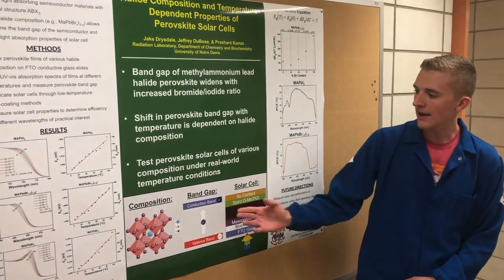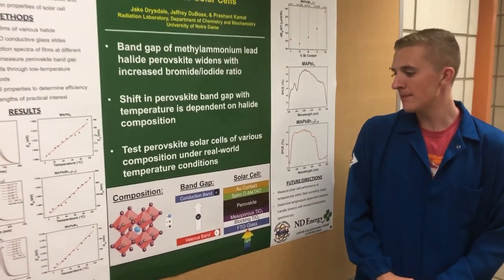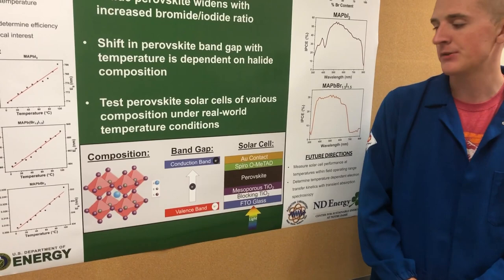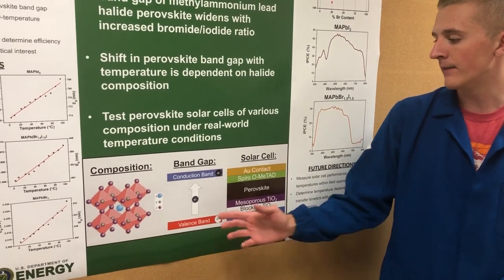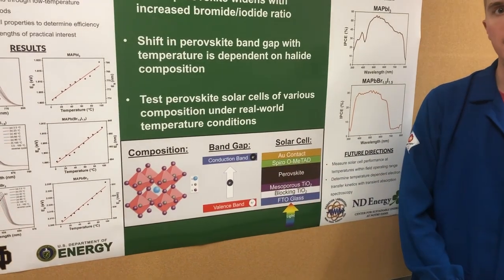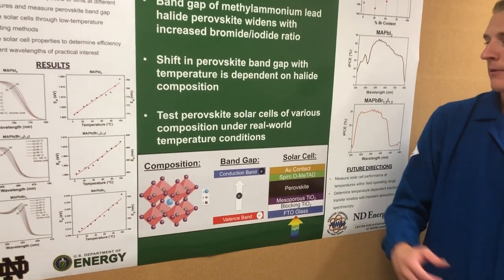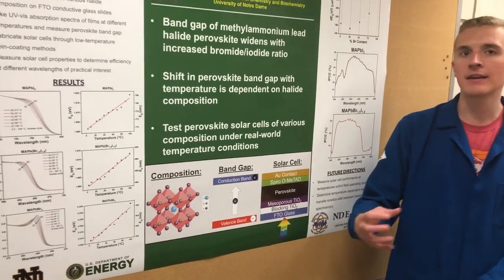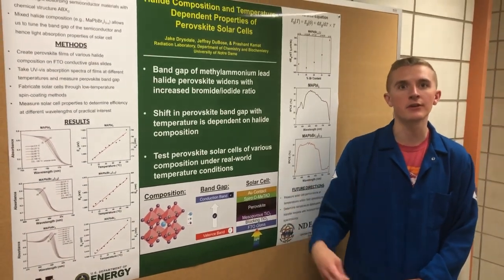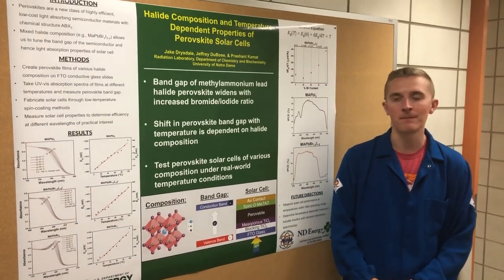The bandgap corresponds to the minimum energy required to excite an electron from perovskite's ground state, the valence band, to its excited state, the conduction band, where the electrons that are excited can then be collected and run through a circuit to generate power.